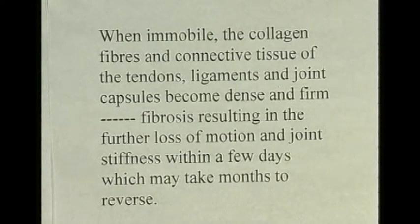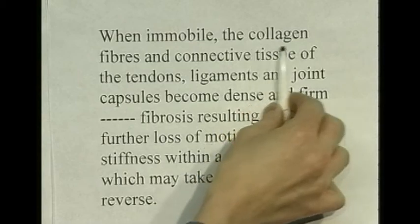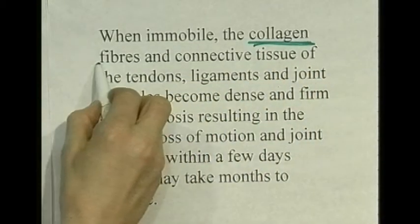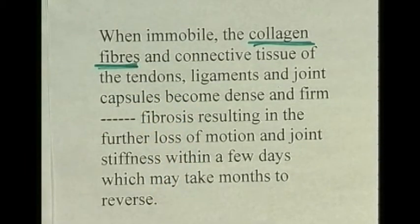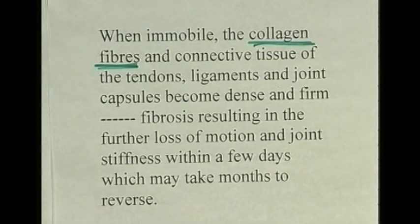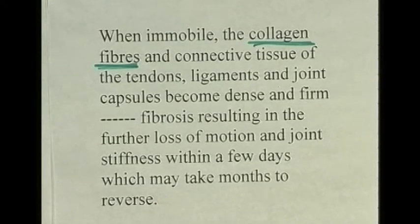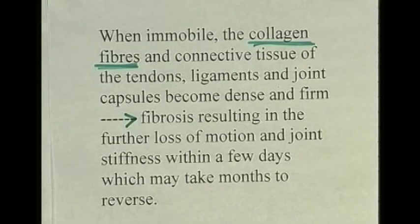When immobile, the collagen fibers — collagen being the common component of connective tissue found in tendons (which connect muscles to bones) and ligaments (which connect bones to bones) — these fibers in the tendons, ligaments, and the joint capsule (the fibrous tissue surrounding the joint that contains the synovial fluid) all become denser and firmer. This leads to fibrosis — an overgrowth of fibrous tissue in the tissues surrounding a joint if that joint is immobilized for any period of time.